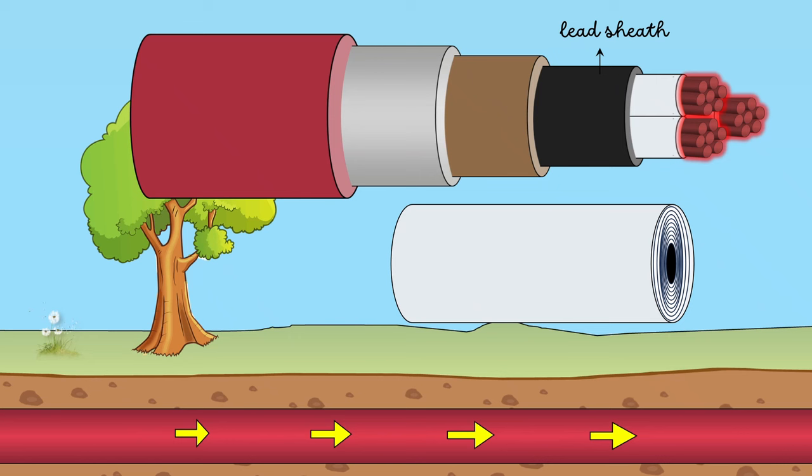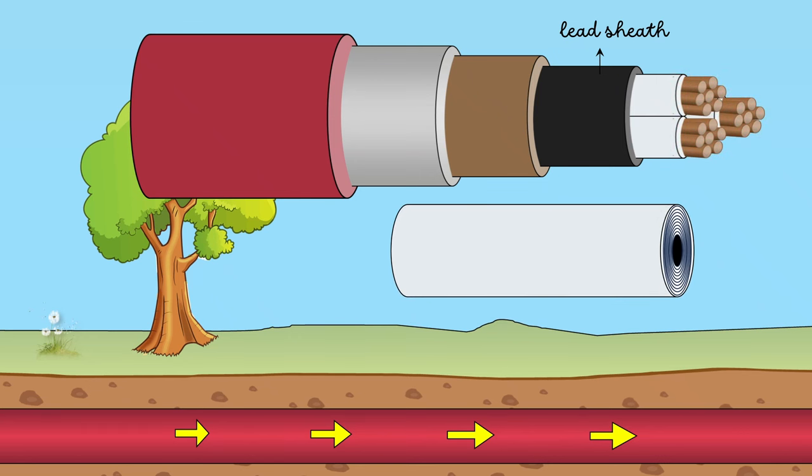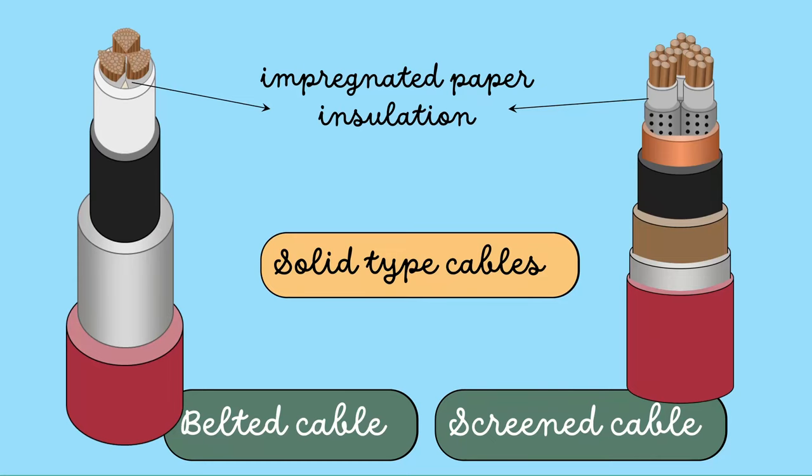When the load on the cable decreases, the conductor cools and the paper insulation contracts. This may result in the formation of voids. Voids are nothing but vacant spaces. They may cause permanent damage to paper insulation. Therefore, for higher voltages beyond 66 kV, these solid type cables are not recommended.